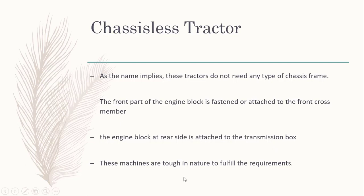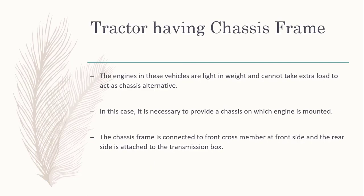These chassis-less machines are tough in nature to fulfill the requirement. If a full chassis frame were provided, there would always be difficulty while taking a turn to the left or right. The chassis-less design allows a smaller turning radius, making maneuvering easier. For tractors having a chassis frame, those structures are already provided with a chassis frame. In these vehicles, the engine is light in weight and cannot take the extra load, so the chassis acts as an alternative structural support.